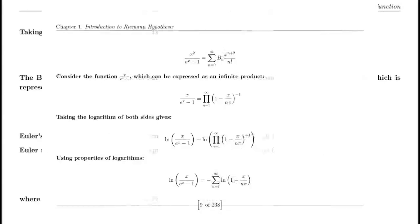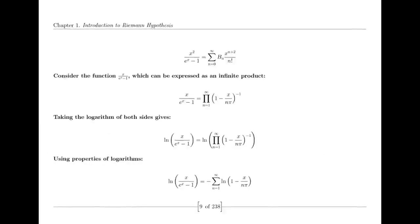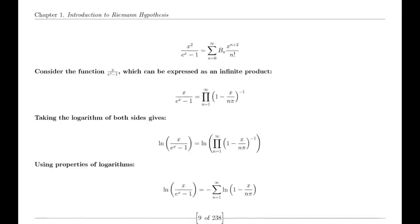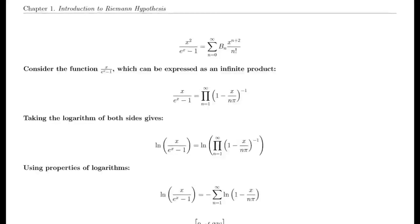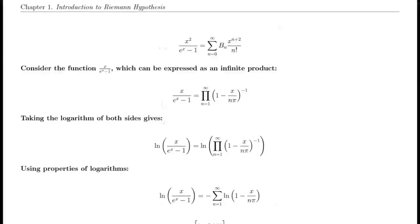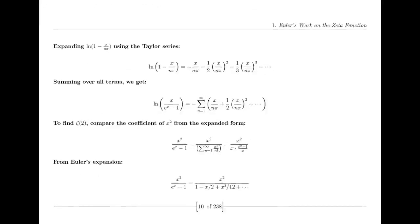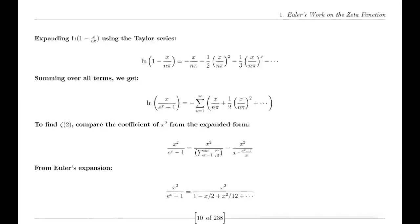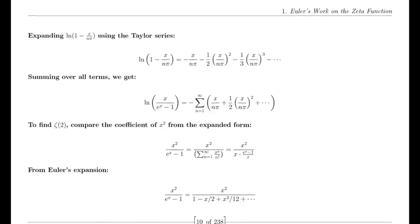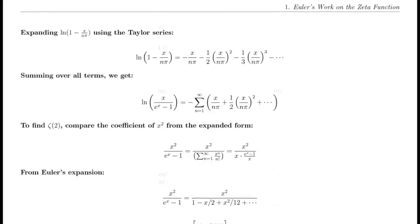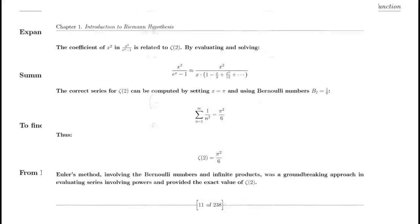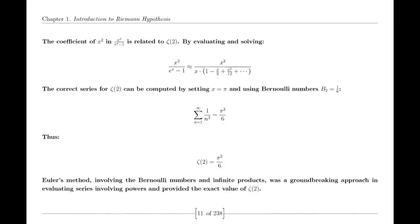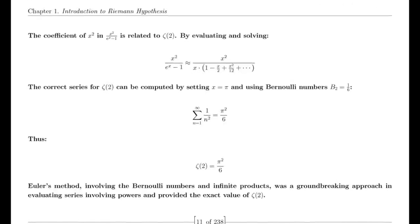The functional equation of the zeta function relates its values at s and 1−s through a complex expression involving π, the gamma function, and trigonometric functions. This equation is a key result showcasing the symmetry of the zeta function and the deep relationships between different mathematical concepts.